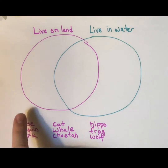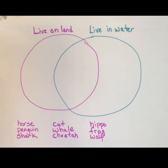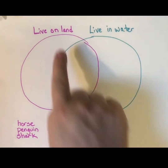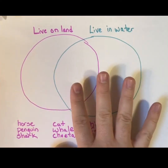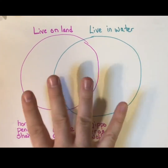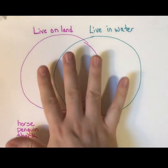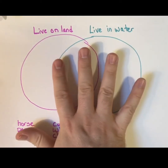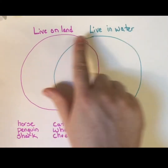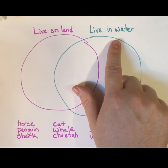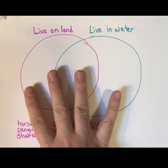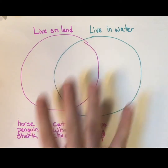I have a list of animals, and I have two categories. Venn diagrams are often used with circles — sometimes two circles. I've even seen ones with three circles before, but we're going to only focus on the ones with two circles. So I have two categories: animals that live on land and animals that live in the water. And I'm going to organize all of my animals into these two categories.